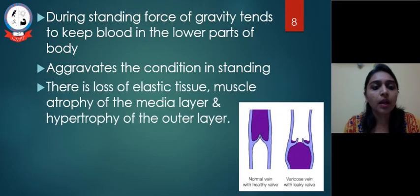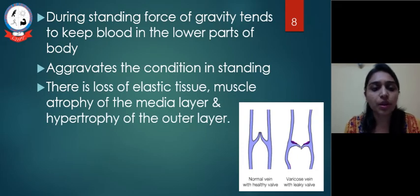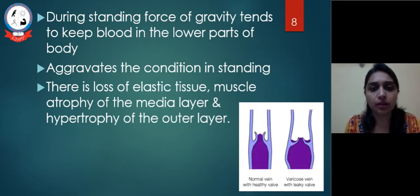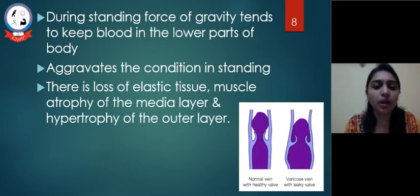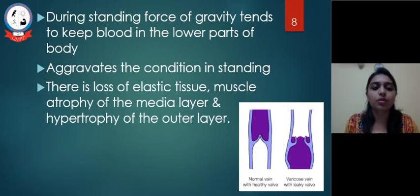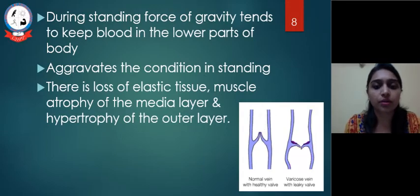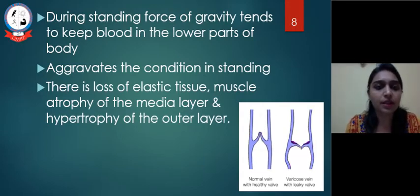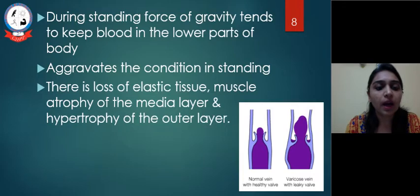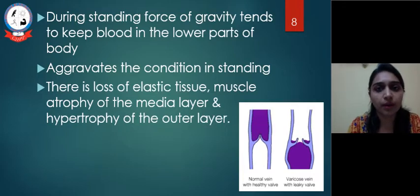There is loss of elastic tissue and muscle atrophy of the media layer. In tunica media there is loss of both elastic and muscle tissue, and hypertrophy of the outer layer may occur.